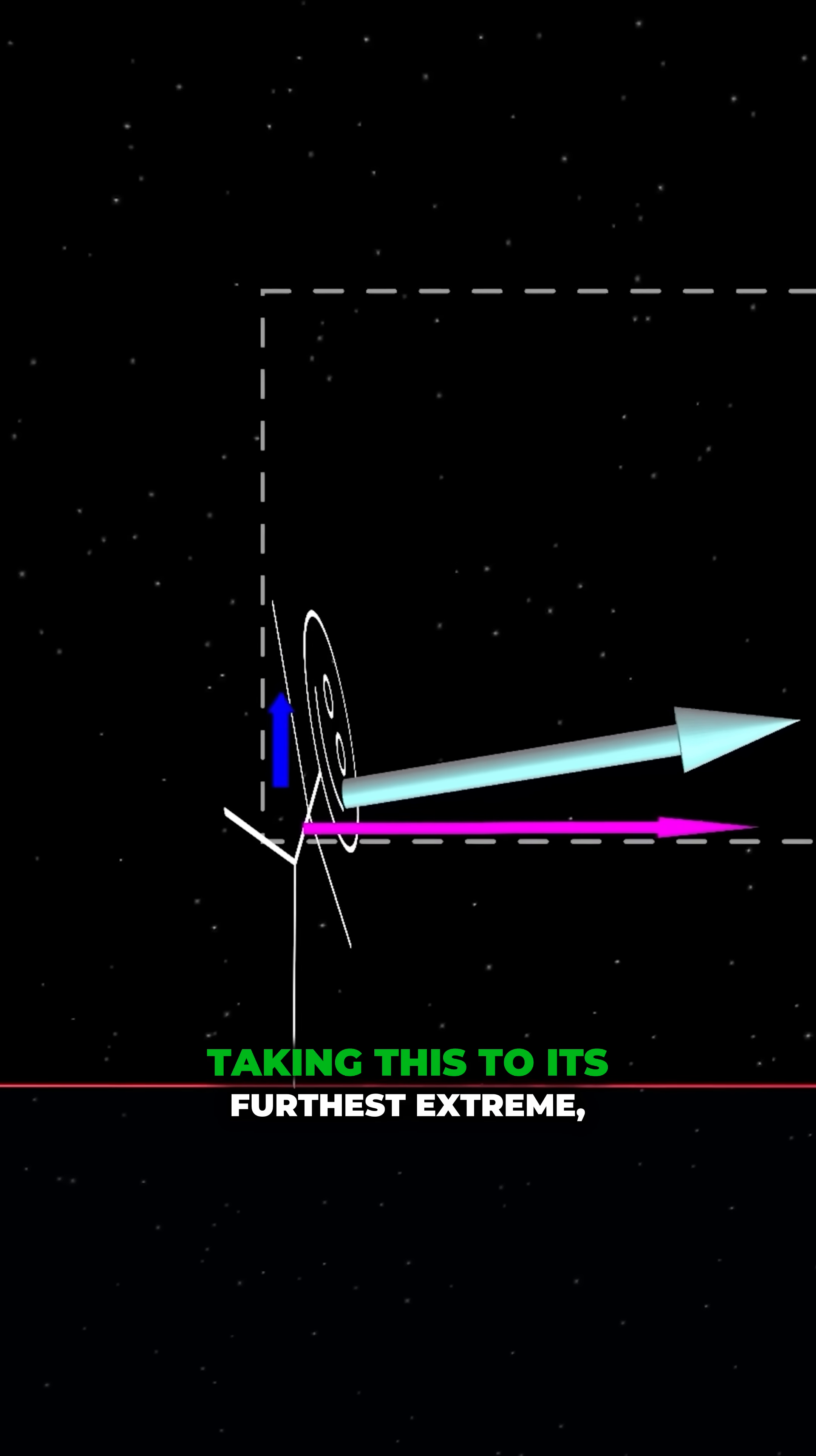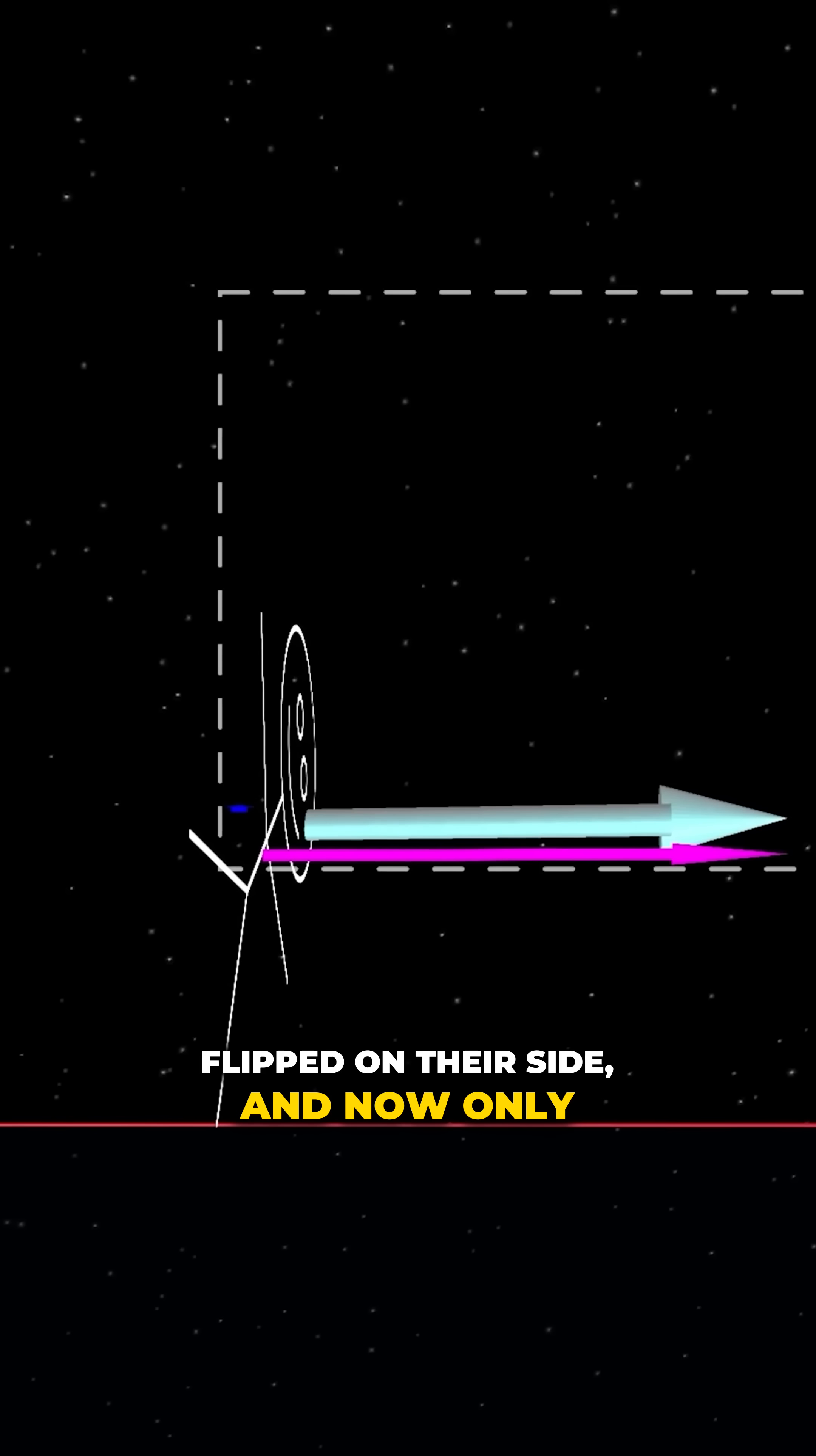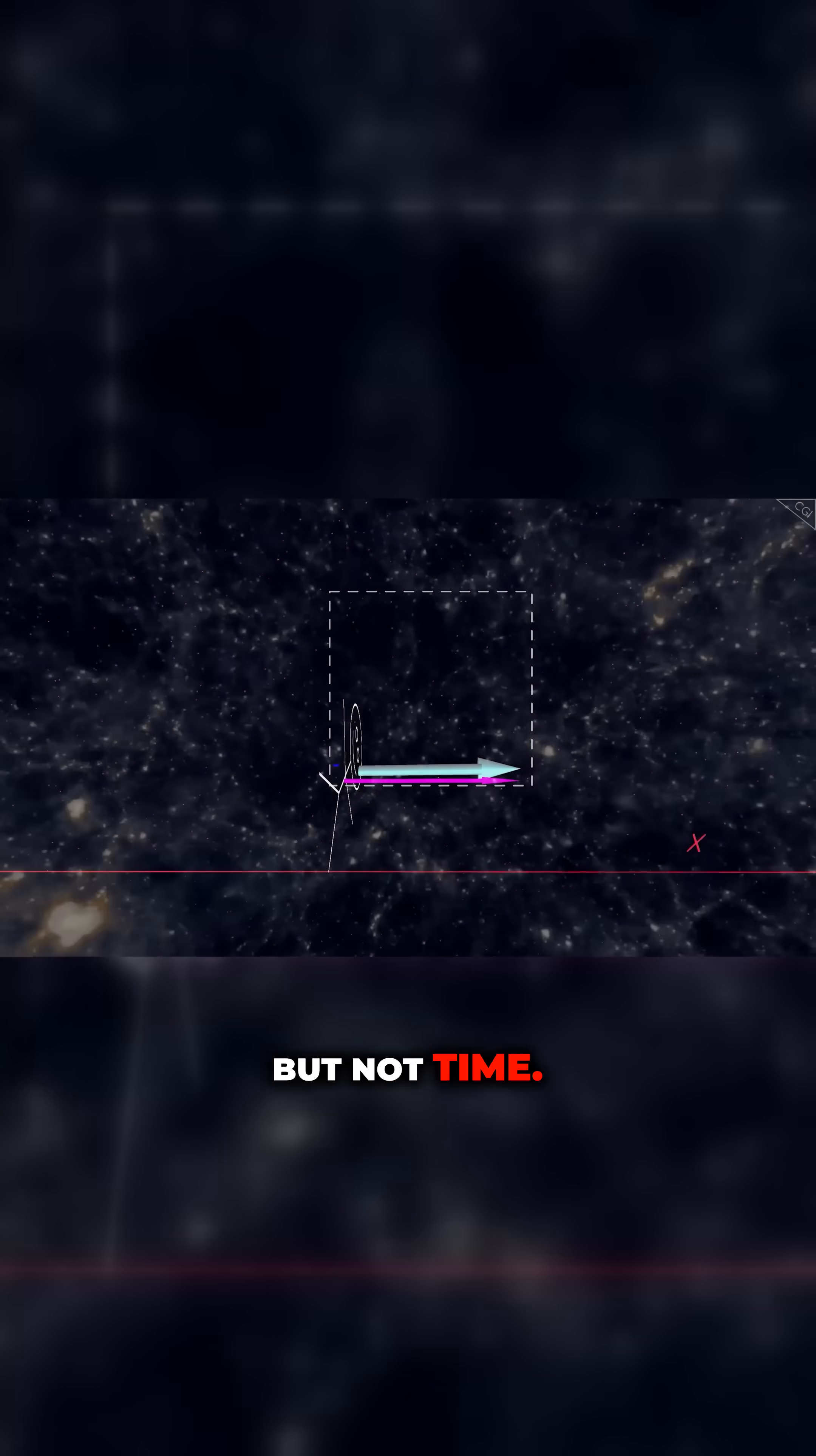Taking this to its furthest extreme, our individual has completely flipped on their side and now only has motion in the direction of X, and none in the direction of Z. They have velocity in space, but not time.